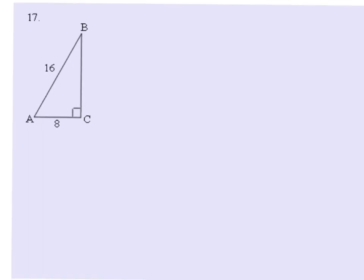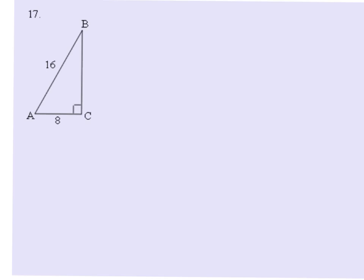In number 17, we have another example that you may recognize once you write out your trigonometric ratio. For angle A, we have the adjacent leg which is 8 and the hypotenuse which is 16. So we're looking at cosine of angle A equals adjacent over hypotenuse, 8 over 16. If you reduce 8 over 16, that equals 1 half.